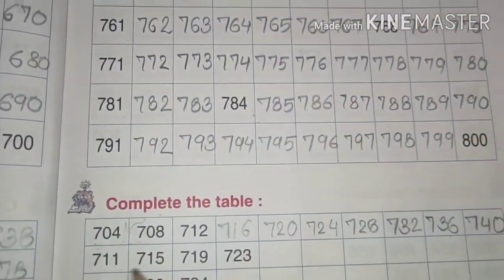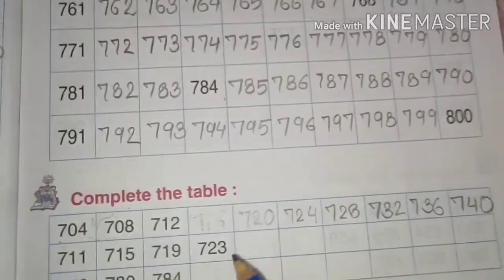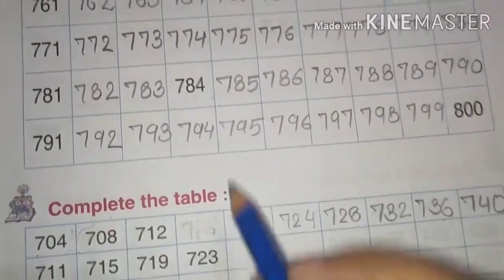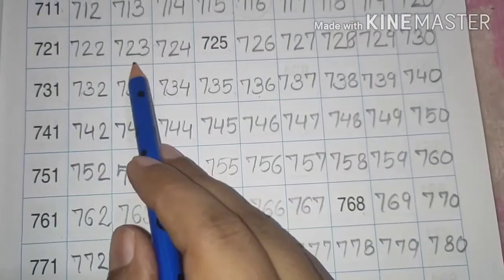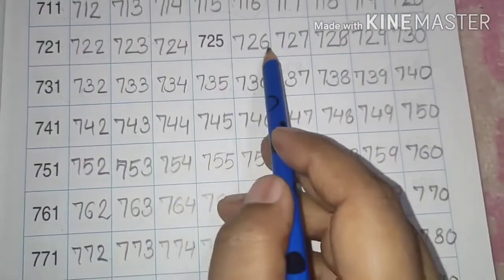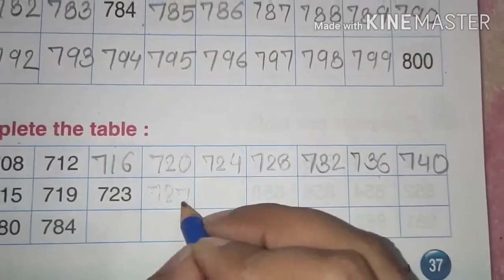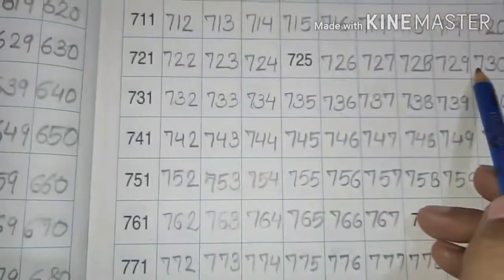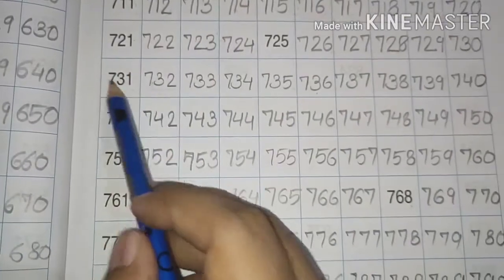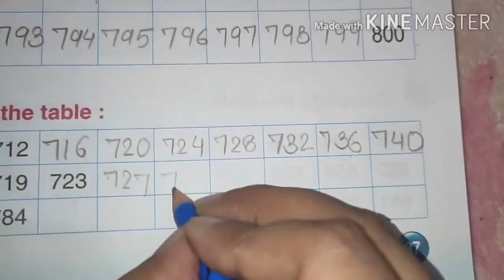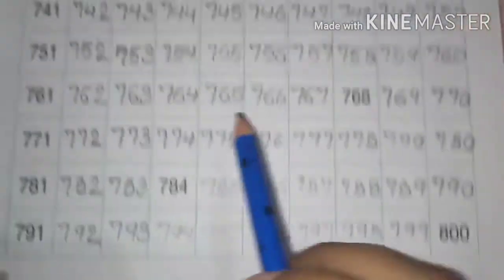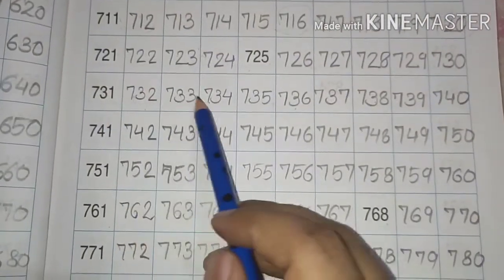Now we have 711, 715, 719, 723. 723 yaha par hai. 1, 2, 3, 4. 727. 727 ke baad 1, 2, 3 and 4. So we have 731. After 731, 1, 2, 3, 4. So we have 735.